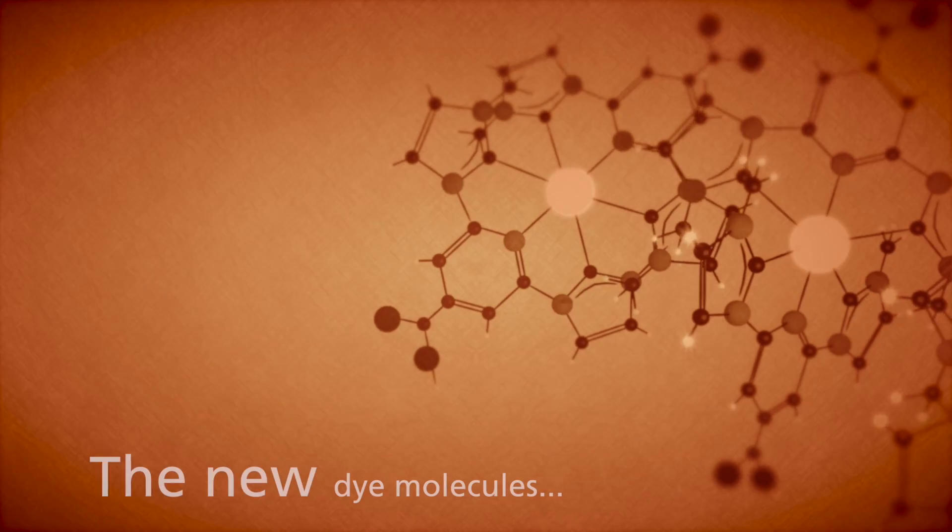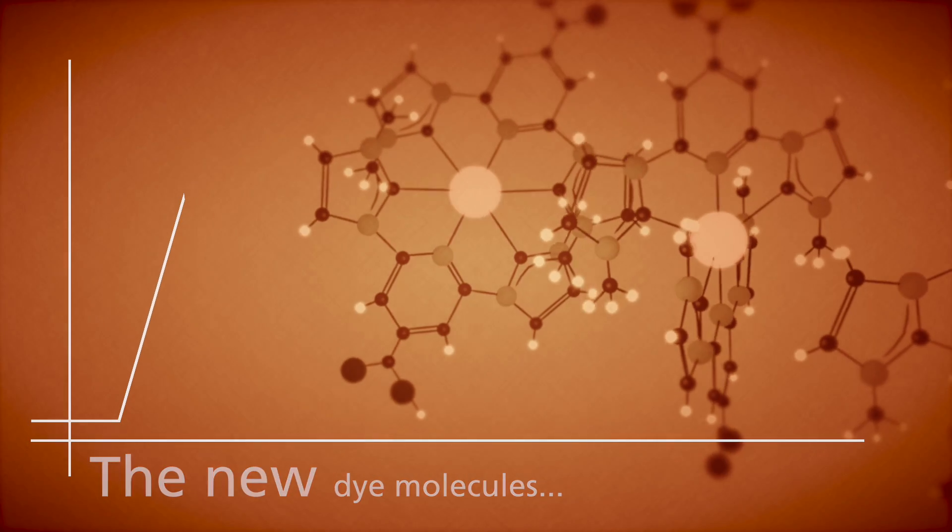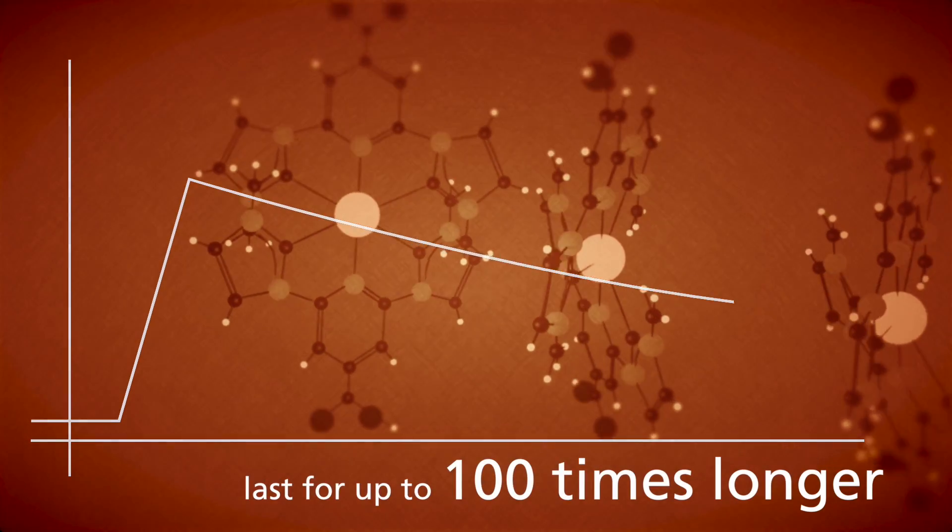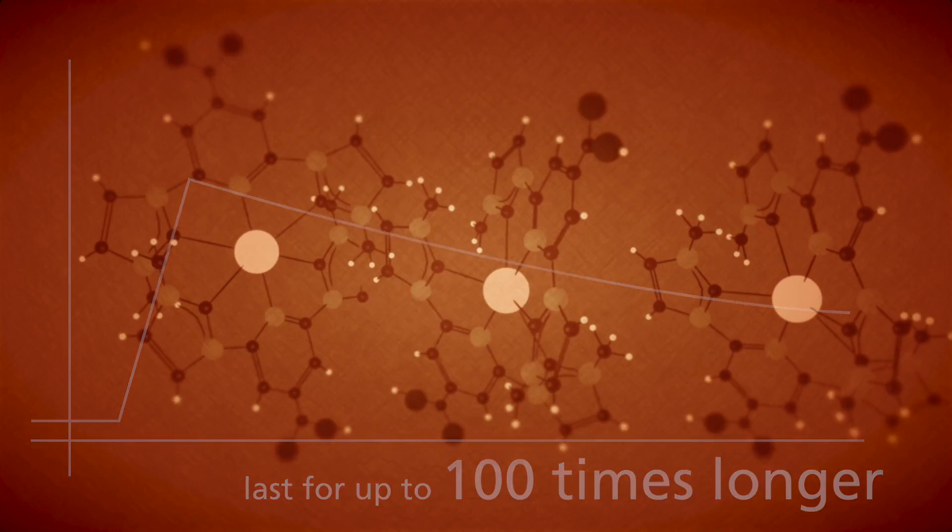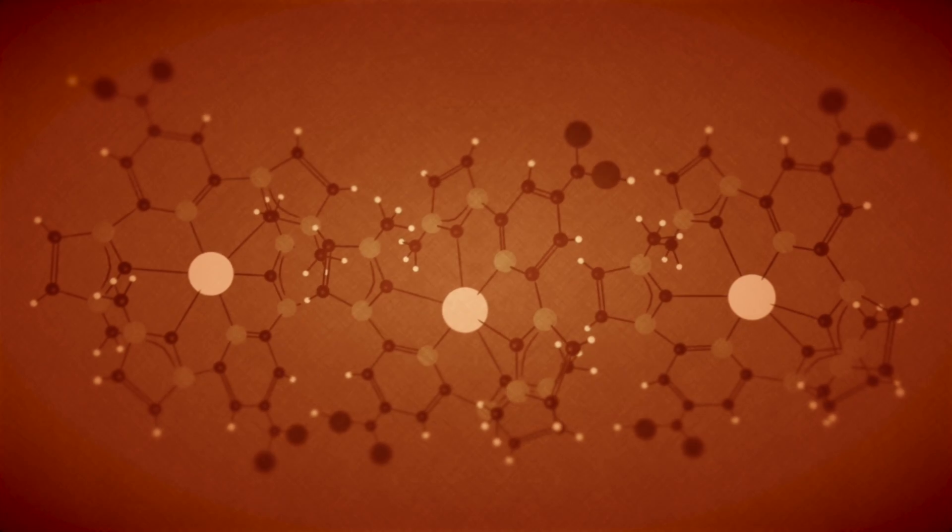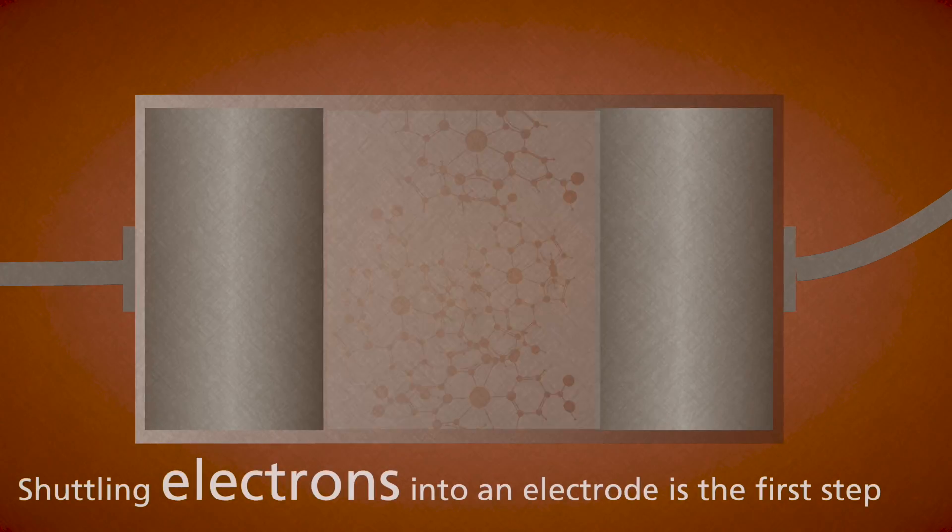We have made dye molecules that are able to keep this energy for up to a hundred times longer than previous dye molecules of iron. We can use this energy to shuttle electrons into an electrode.